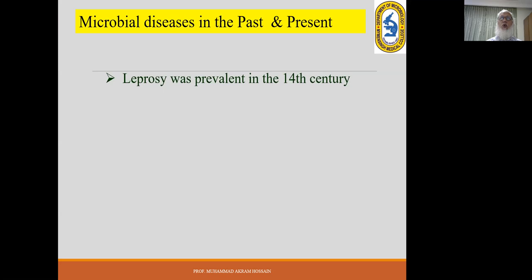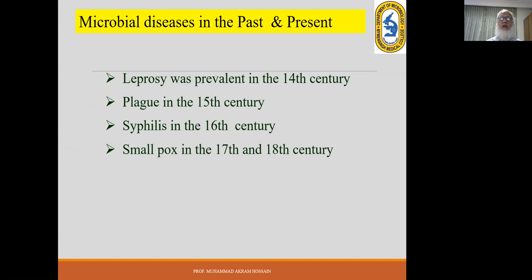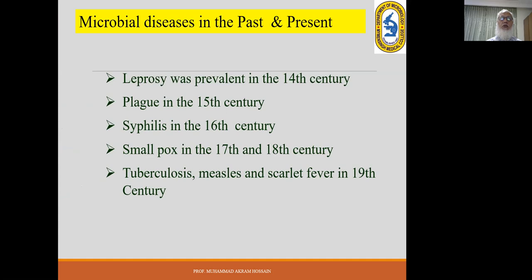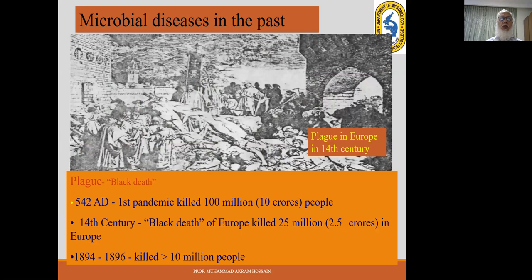Different microbial diseases were prevalent at different times. In the 14th century: leprosy; 15th century: plague; 16th century: syphilis; 17th and 18th centuries: smallpox; 19th century: TB, measles, and scarlet fever; AIDS in the 20th century; and COVID-19 in the 21st century.